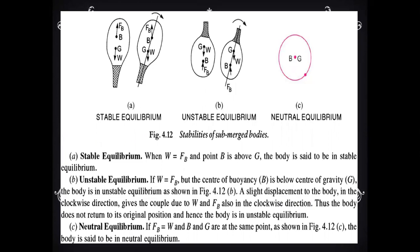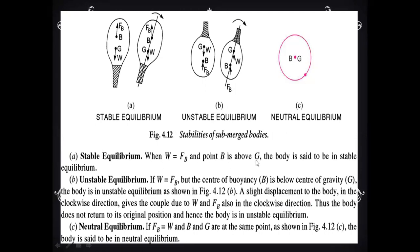There are three conditions: stable equilibrium, unstable equilibrium, and neutral equilibrium. First is stable equilibrium: when W is equal to FB and point B is above G, then the body is said to be in stable equilibrium, as seen in figure A.